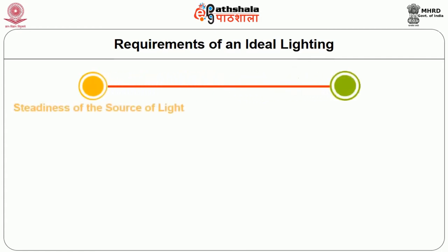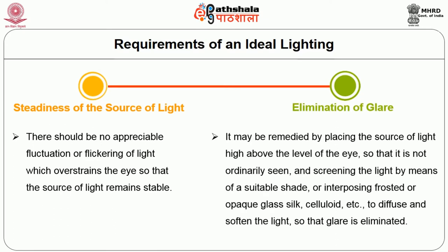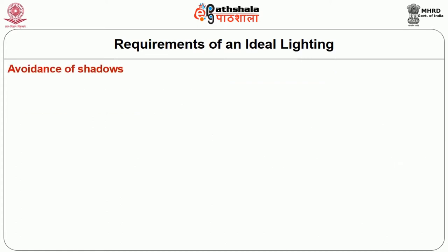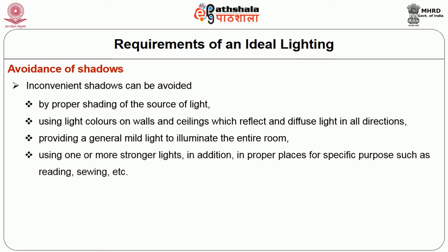Requirements of ideal lighting: Steadiness — there should be no appreciable fluctuation or flickering of light that overstrains the eye, so the source of light remains stable. Elimination of glare may be remedied by placing the source of light high above eye level so it is not ordinarily seen, and screening the light by means of suitable shades or interposing frosted or opaque glass, silk, or celluloid to diffuse and soften the light. Avoidance of shadow: inconvenient shadows can be avoided by proper shading of the source of light, using light colors on walls and ceilings to reflect and diffuse light in all directions, and using one or more stronger lights in proper places for specific purposes such as reading and sewing.